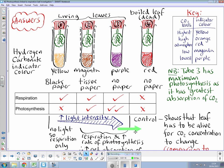The control tube shows that the leaf has to be alive essentially for CO2 concentration to change, and it can be used to compare between the control and tube three. Well done.